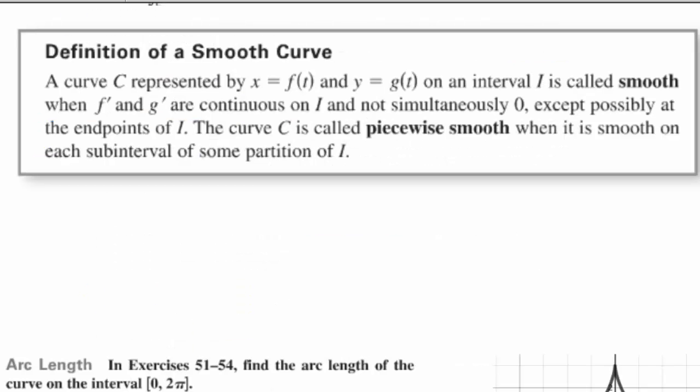So what is a smooth curve? Well, for parametric equations, you have a curve represented by our two parametric equations. And it's smooth if our derivatives are continuous on some interval and not simultaneously zero. Now that's the part I want to key in.